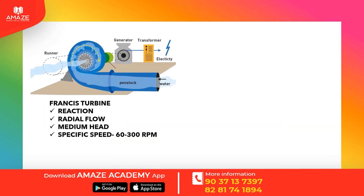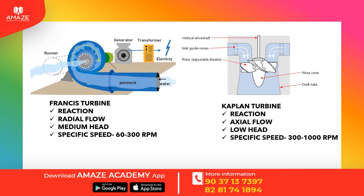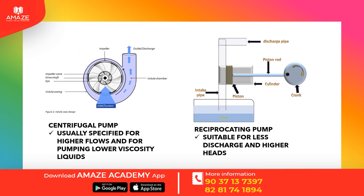Francis turbine is a reaction turbine with radial flow, suitable for medium head applications; specific speed is 60 to 300 rpm. Kaplan turbine is also a reaction turbine, with axial flow, suitable for low head applications; specific speed is 300 to 1000 rpm. Pumps include the centrifugal pump and the reciprocating pump. The centrifugal pump is usually specified for higher flows and for pumping lower viscosity liquids, while the reciprocating pump is suitable for less discharge and higher heads.